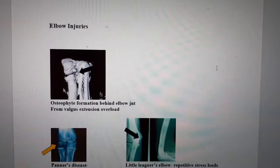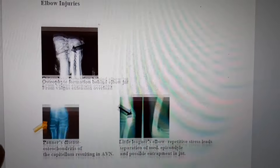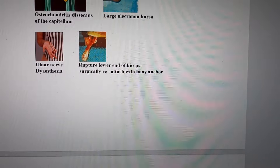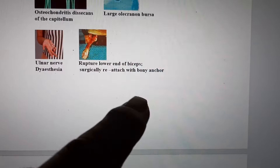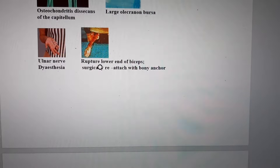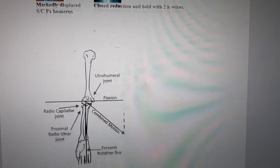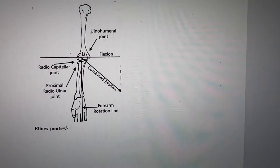Sports injuries, elbow injuries, illustrated here. Note the arrows indicating rupture of the long head of the biceps tendon at the low end of the elbow joint.